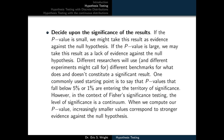This probability is commonly referred to as the p-value of the test. Next, we'll decide upon the significance of the results. If the p-value is small, we might take this result as evidence against the null hypothesis. If the p-value is large, we may take this as a lack of evidence against the null hypothesis. Different researchers and different experiments might call for different benchmarks — one commonly used starting point is that p-values below 5% or even 1% are entering territory of significance.